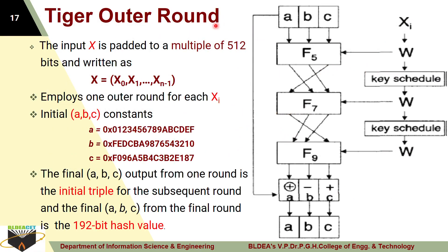In the hash function there are three outer rounds, and this shows one outer round. The input X is padded to a multiple of 512 bits. As mentioned earlier, your message is divided into blocks and each block is of size 512 bits. So the message X consists of multiple 512-bit blocks, represented as X0, X1, up to X(n-1). Each block is 512 bits, and Xi indicates one block input.